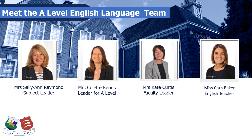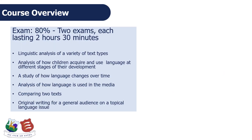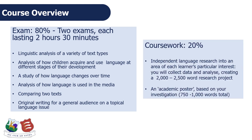So what does the course involve? At A-Level, English language is assessed by 80% exam and 20% coursework. The content of the exam papers is outlined here for you, and as you can see, the course deals with very different topics compared to GCSE English language. There is much more focus on linguistic analysis. Learning about how children acquire language and how language changes over time are areas which will be new to you.